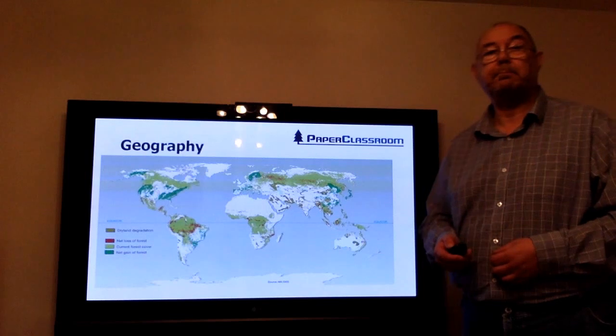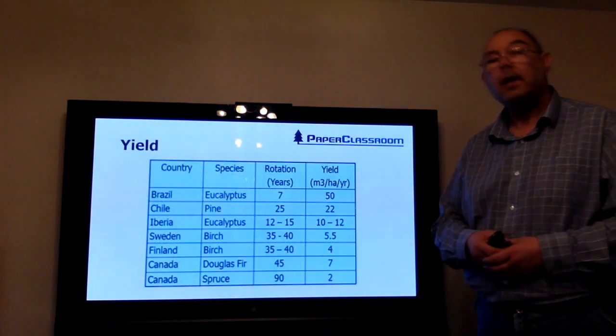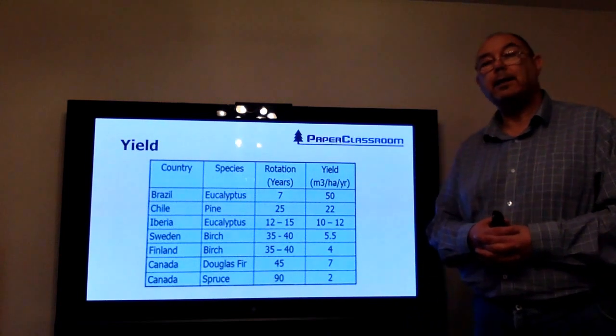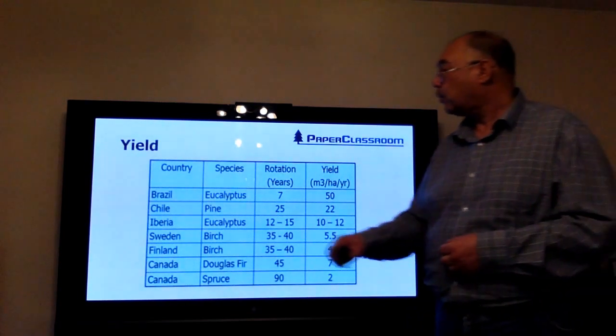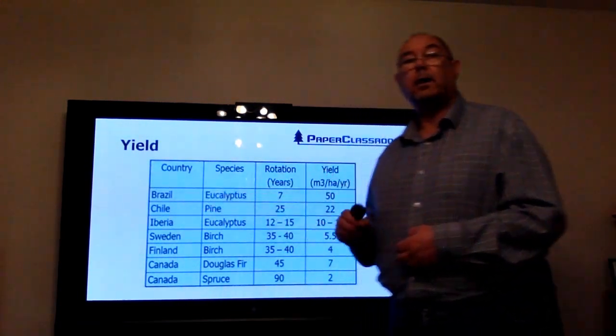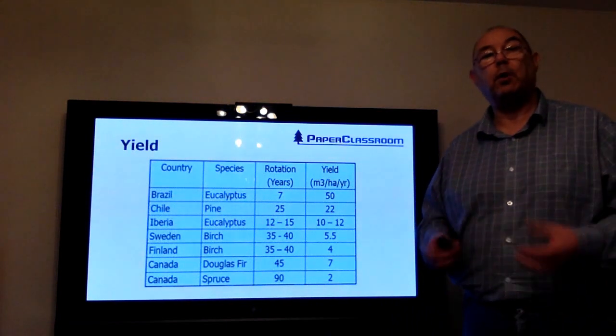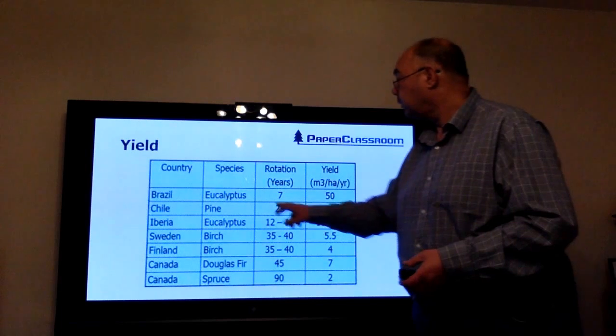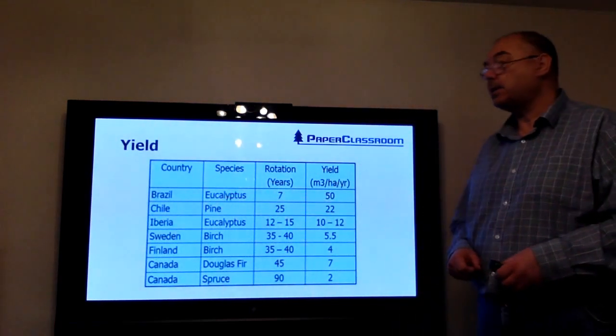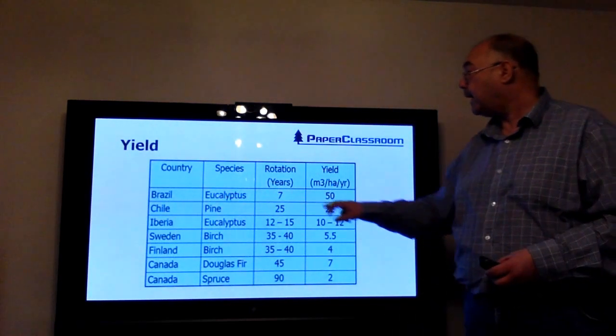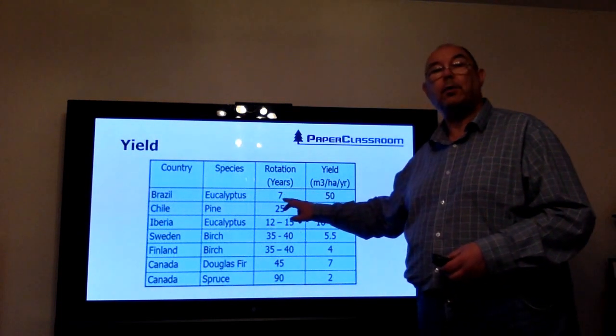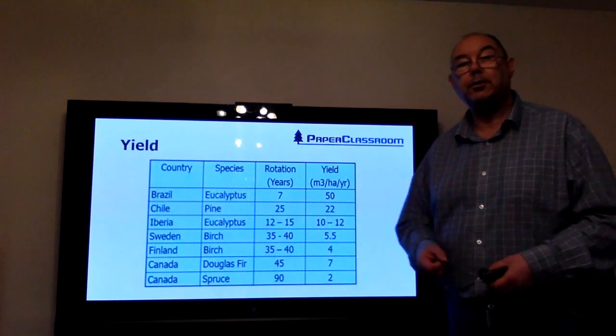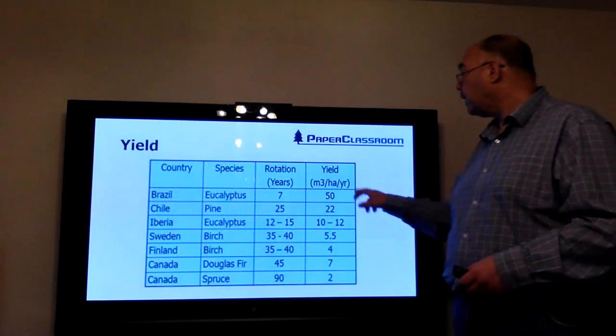First thing to do is to look at the yield. It's quite interesting looking at the yield of trees. So Brazil, a hot humid country with plenty of water and plenty of heat—trees grow quickly. Eucalyptus is one of the most common trees grown in this area for harvesting. As you can see, it has a stock rotation of only seven years.